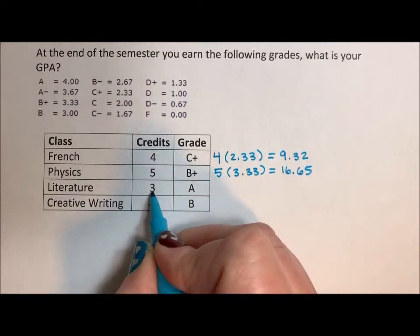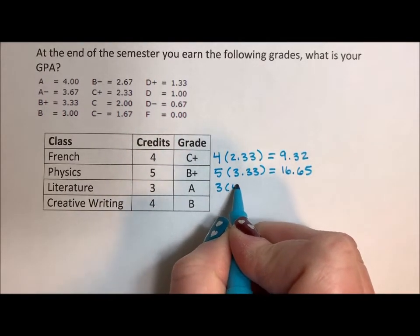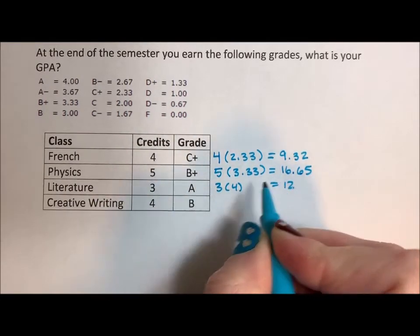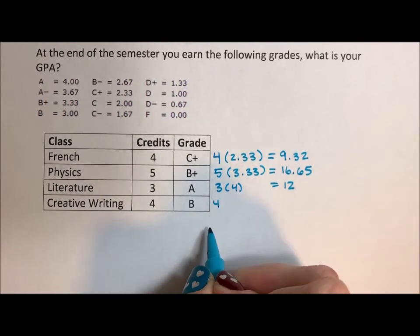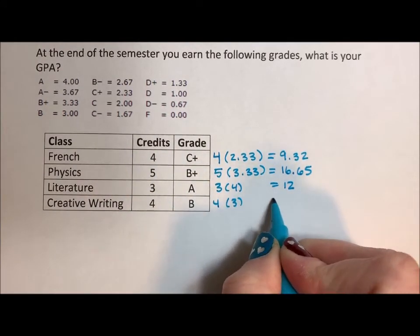Literature is a three-point class, and you have an A, so three times four is 12. And creative writing is a four-point class, and you have a B, so four times three is 12.